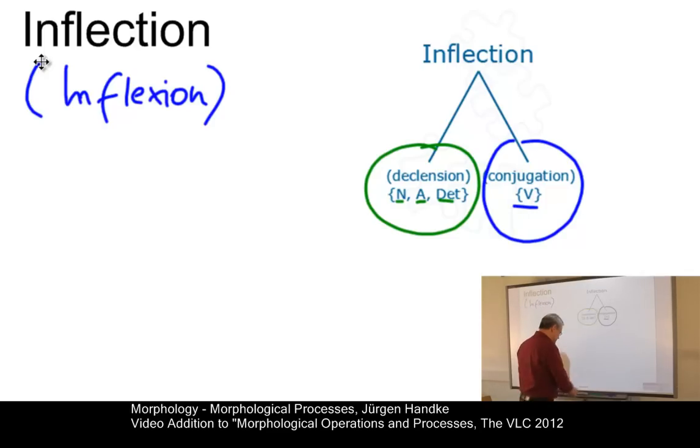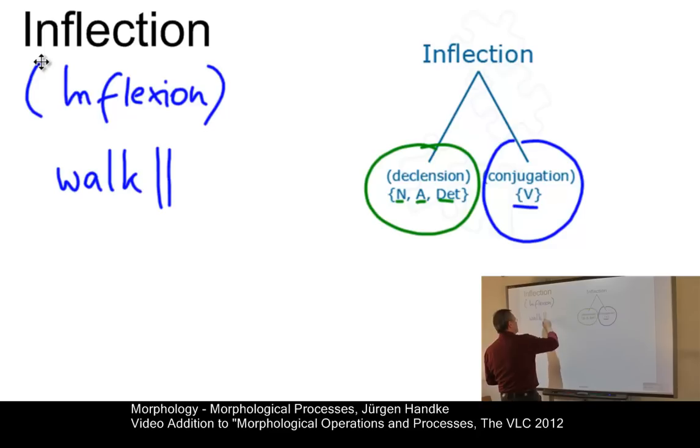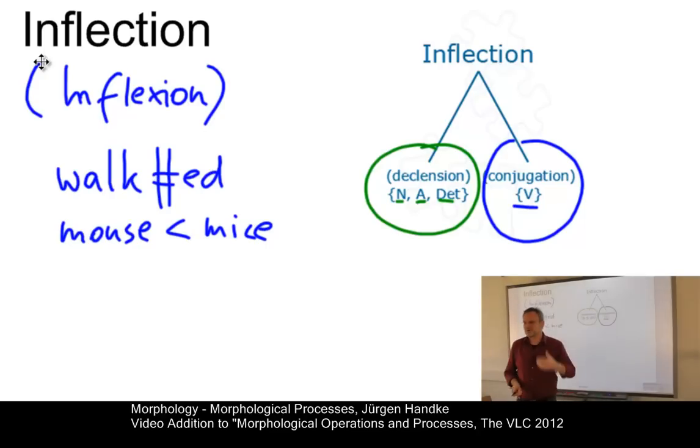Let's look at some examples. Now, here we have a typical example of inflection. Walk plus the morph ED. I'm using orthographical notation here for reasons of simplification. Here we have a concatenative operation where you add a suffix to a base form. In the example mouse, which becomes mice, we don't have a concatenative operation, but a vocalic change, one particular type of non-concatenative operations. And in go, which might become went, we have an example of suppletion.